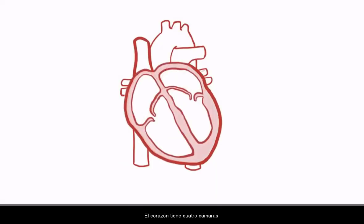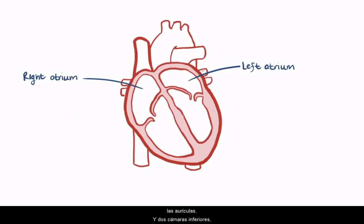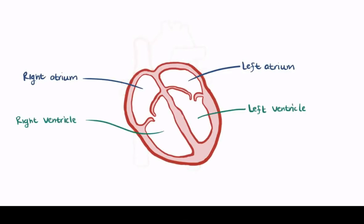The heart has four chambers. Two upper chambers, the left and the right atrium — or together, the atria — and two lower chambers, the left and the right ventricles.